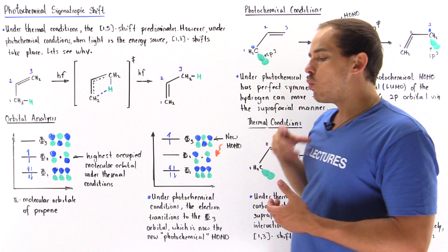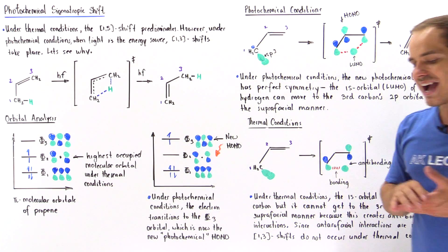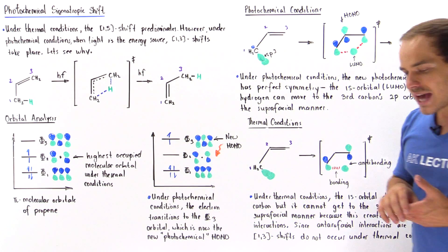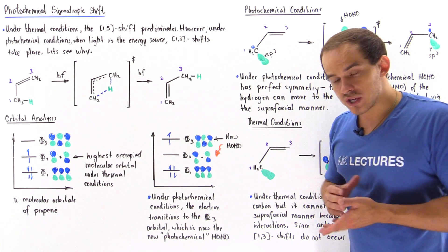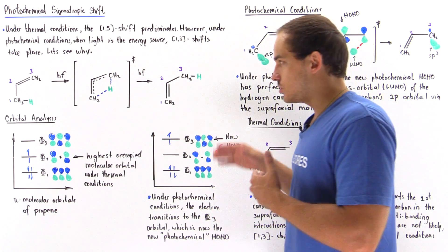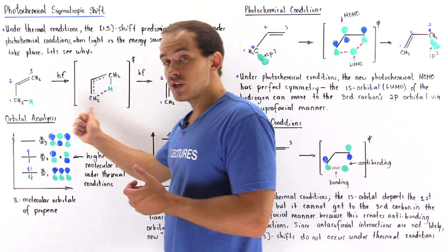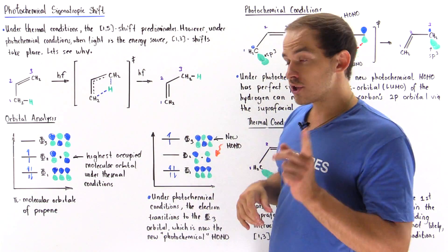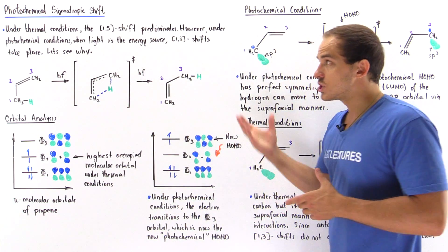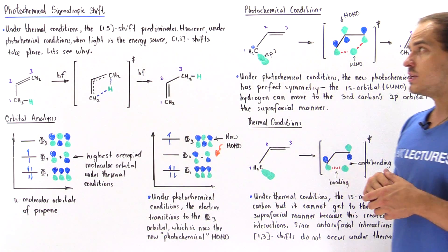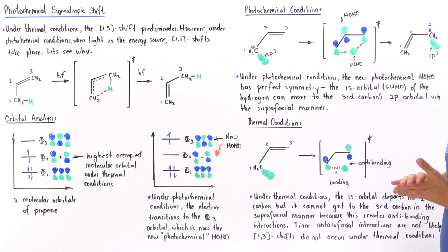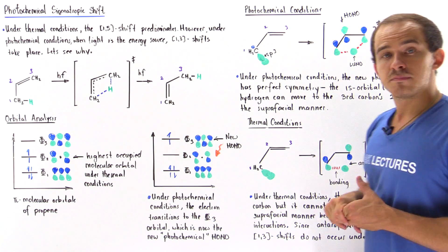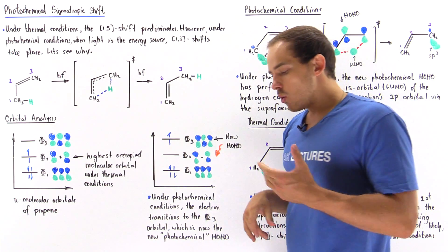So why is it exactly that under photochemical conditions this reaction takes place, but under thermal conditions the 1,3 sigmatropic shift as shown does not take place?